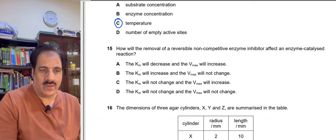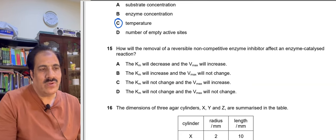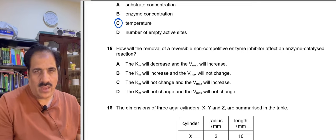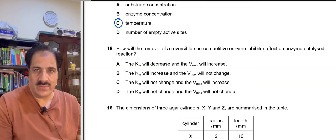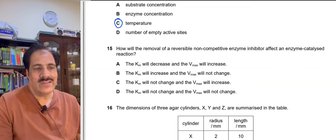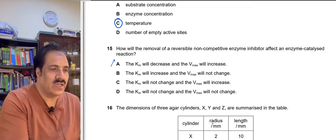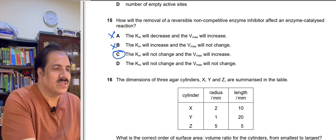Question 15: How does removal of a reversible non-competitive enzyme inhibitor affect an enzyme-catalysed reaction? A competitive inhibitor affects Km, but a non-competitive inhibitor does not affect Km. Removing the non-competitive inhibitor will increase Vmax because the reaction can proceed faster. The Km remains unchanged while Vmax increases. Therefore the correct option is: Km will not change and Vmax will increase.